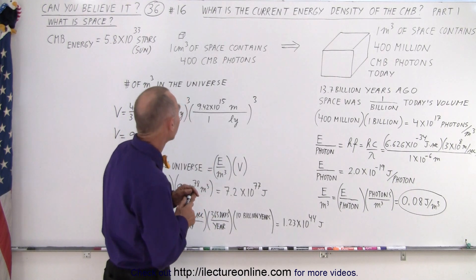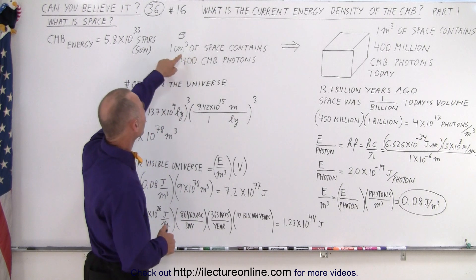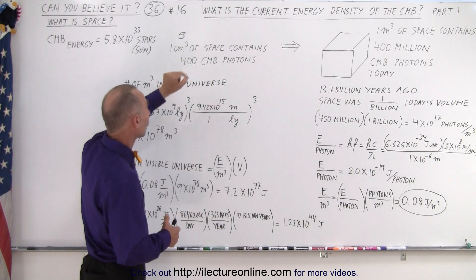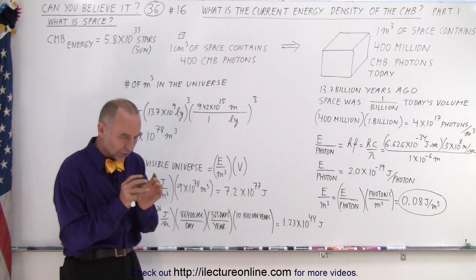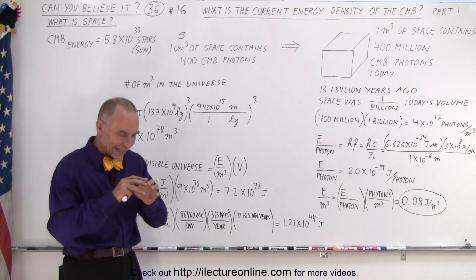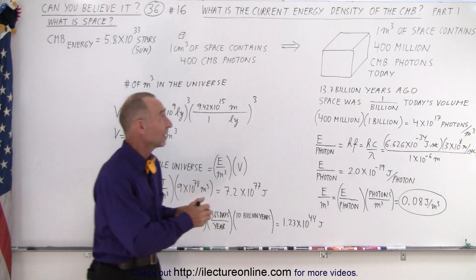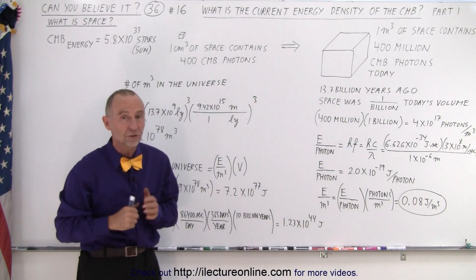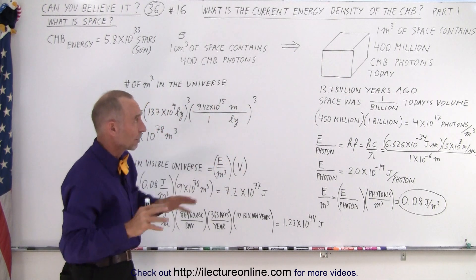We currently know that the number of CMB photons per cubic centimeter in space is 400. So there are 400 CMB photons in a cubic centimeter, which means that in a cubic meter, there are 400 million CMB photons today traveling in all directions.